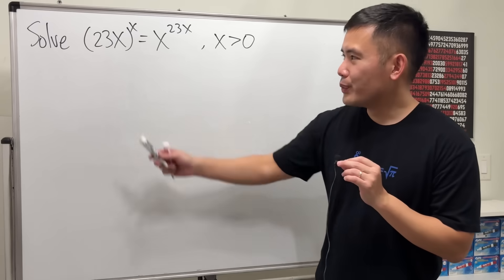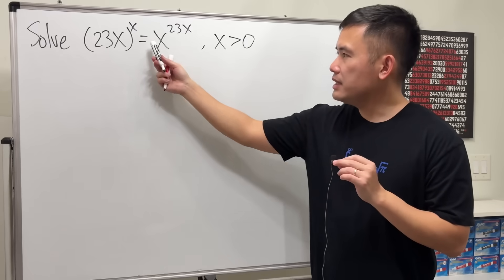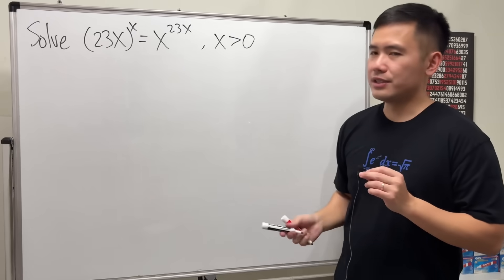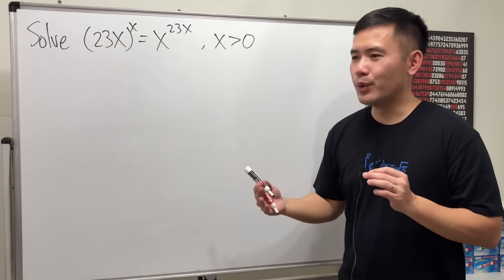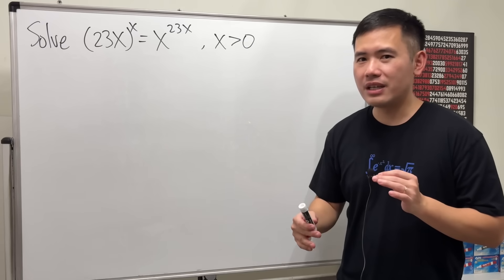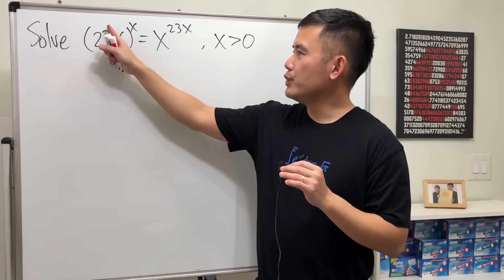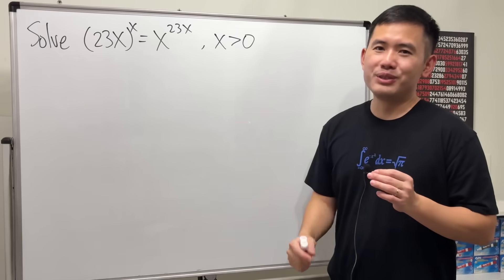Let's see how to solve this equation: we have (23x)^x = x^(23x), where x > 0. In fact, if you don't have this condition, people will get into debate because they will say it's a zero solution. But if you have x = 0, you end up with 0^0, well I'll let you decide that.